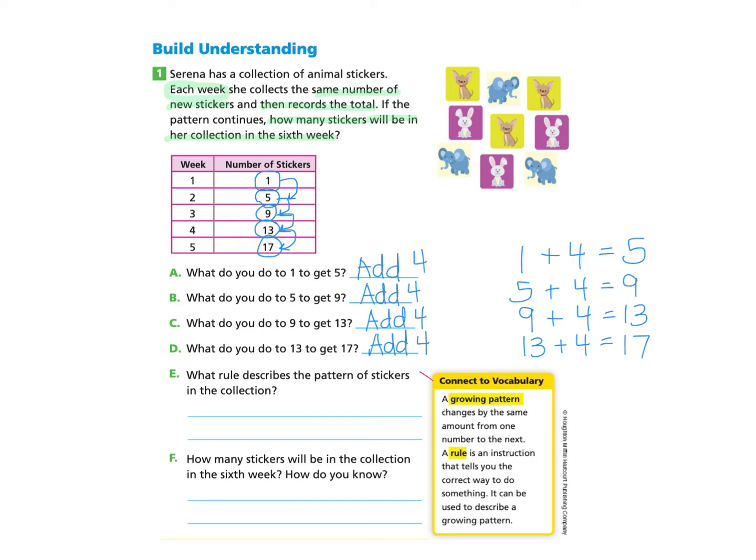Let's take a look at the connective vocabulary. A growing pattern changes by the same amount from one number to the next. So we are noticing our growing pattern to be adding 4 to each number from one number to the next. And then our next vocabulary word is called a rule. And a rule is an instruction that tells you the correct way to do something. It can be used to describe a growing pattern.